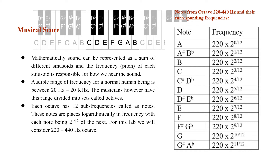For the purpose of this video, we'll focus on the octave that ranges between 220 and 440 hertz. That means note A will have 220 times 2 raised to the power 0 over 12, which is 220 hertz. And the last note, which is note G, will have a frequency of 220 times 2 raised to the power 11 over 12 hertz.